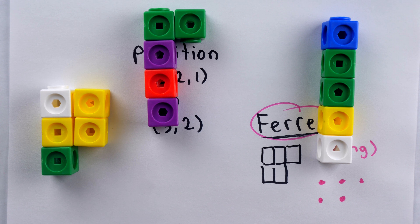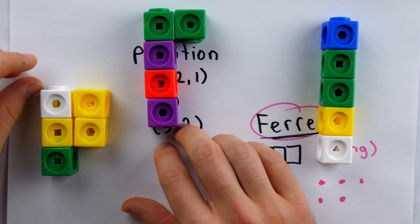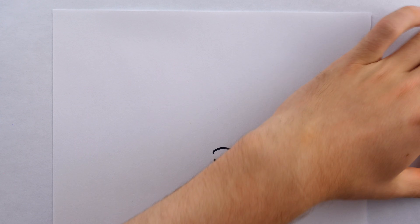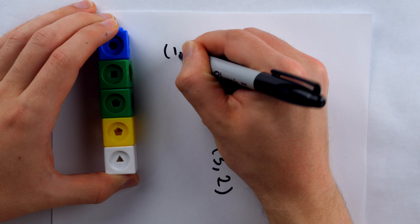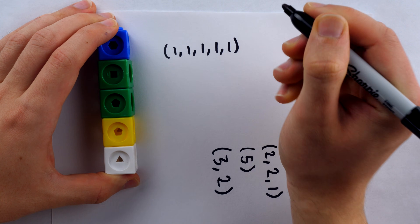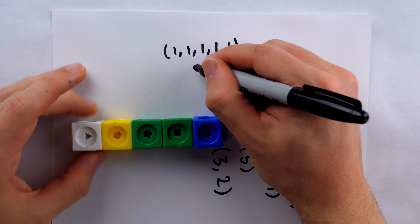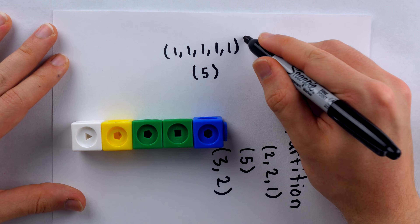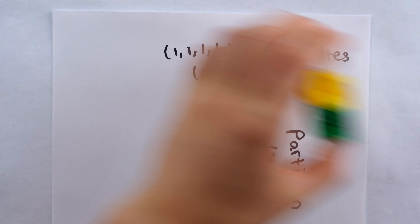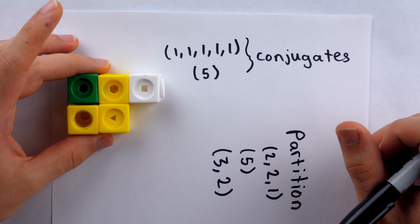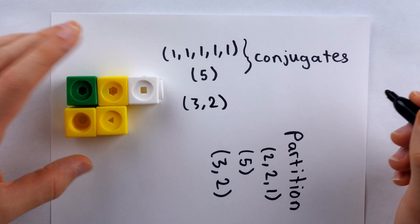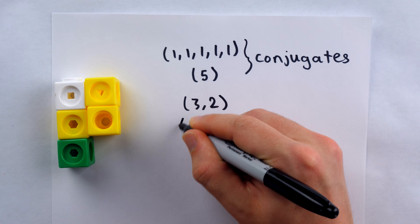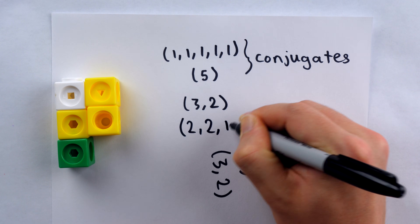From one we get the other, and from the other we could get the one. This process of swapping rows and columns is actually creating what we call conjugates. If I have the partition (1, 1, 1, 1, 1) — five ones — by taking this column and making it a row, thus having a partition into a single part of five, this is a conjugate relationship. These are called conjugate partitions. As another example, if we took the partition (3, 2) and do the rotation — the first row becomes the first column, the second row becomes the second column — that becomes the conjugate partition (2, 2, 1).